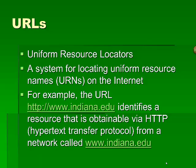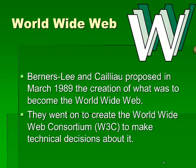One of the techniques used to find web pages is the URL system — Uniform Resource Locator. For example, the URL for Indiana University is http://www.indiana.edu, which identifies a resource obtainable via HTTP, Hypertext Transfer Protocol, one of the key protocols in the TCP/IP family, from a network called www.indiana.edu. Berners-Lee and Cailliau proposed in March 1989 the creation of what became the World Wide Web, and went on to create the World Wide Web Consortium, W3C, a body empowered to make technical decisions about the World Wide Web.